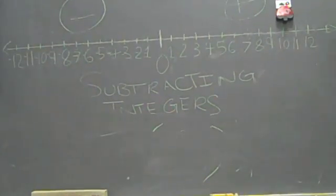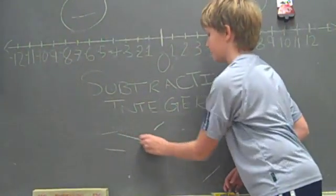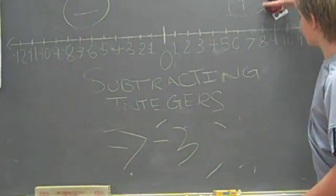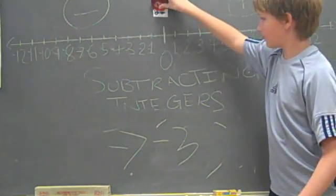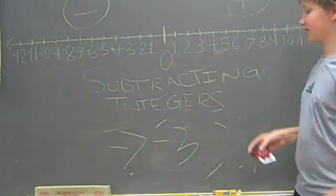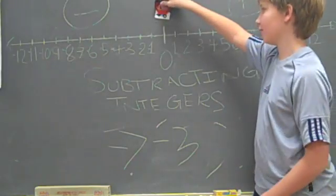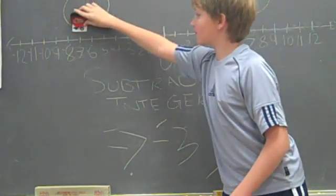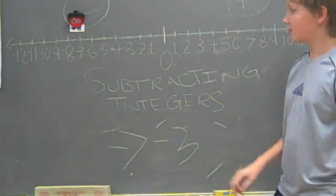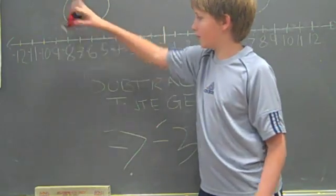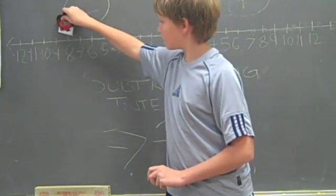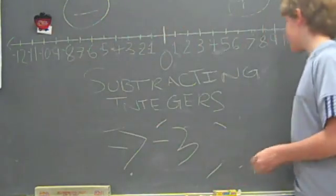For our next equation we'll be doing negative 7 minus 3. We start our car at the origin, like always, and go 7 spaces to the left, because it's a negative number we're starting out with. Now we're subtracting 3, so we back up 3 more. And our answer is negative 10.